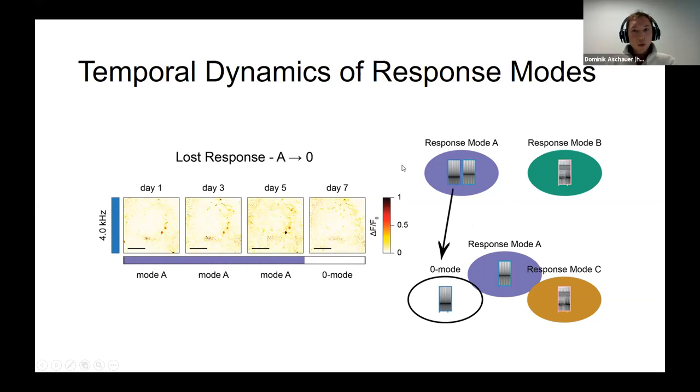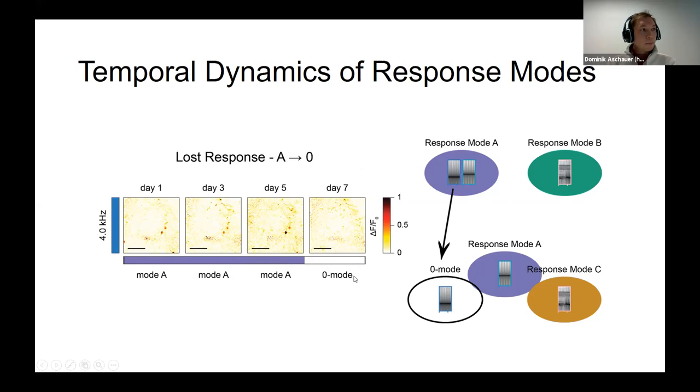On the other hand, we also observe features with strong temporal dynamics. For example, a stimulus which was driven by a given response pattern is not encoded anymore on the last imaging day in this case and falls into the null mode. And it was extremely surprising for us to see that we can also observe complete switches in the response pattern. In this example, you can see a stimulus which was stably encoded by a given pattern on three time points, and there is a switch on the last time point where now a completely different response mode is mapping this particular stimulus.